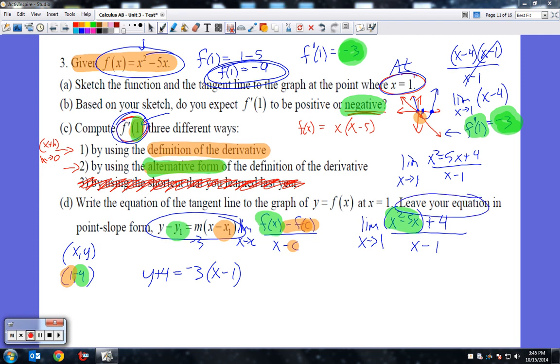If I did continue to simplify, I could write it out as -3x + 3, y + 4. Just for the practice, y = -3x, 3 - 4 is -1. So this would be in slope-intercept form where this is the point-slope form. And that's it. Thank you.